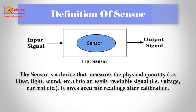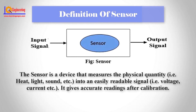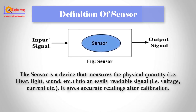Firstly, we see the definition of sensor. The sensor is a device that measures the physical quantity, e.g. heat, light, sound, etc., into an easily readable signal, e.g. voltage, current, etc. It gives accurate readings after calibration.